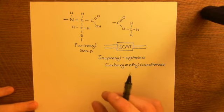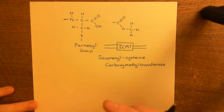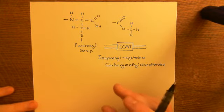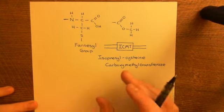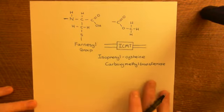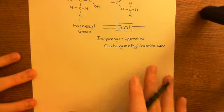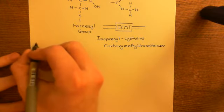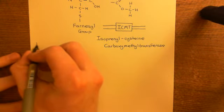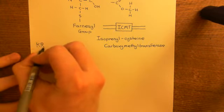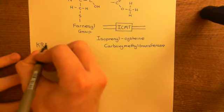Most of the RAS proteins require palmitoylation to move any further, but one of them does not. We'll start with the odd one out, which does not require any palmitoylation — and this is KRAS-4B.